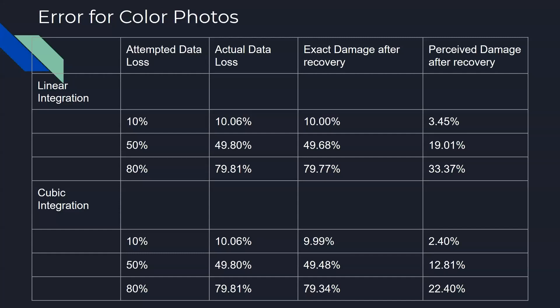Here you can see the error for the color photos. The numbers are fairly consistent; however, cubic spline tends to be around five to ten percent better depending on whether it's black and white or color. We think this is because with grayscale images you're only dealing with a smaller subset of total colors, whereas on full color pictures you're dealing with the full nearly 17 million color spectrum.